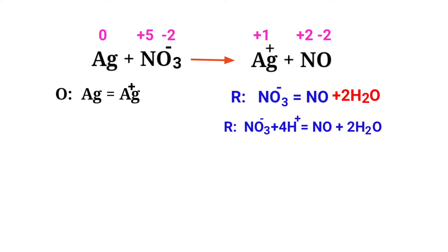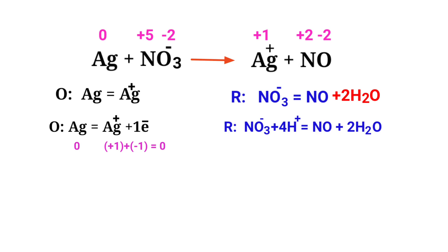For a redox reaction, the sum of charges should be equal on both sides. In the oxidation half reaction, both sides are not equal. You should add electrons — adding one proton to the left side would be wrong, but adding one electron to the right side makes both sides equal to zero. Now the charges are balanced in the oxidation half reaction.